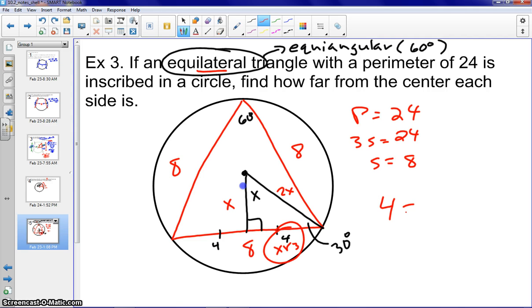So let's go ahead and take the 4, set that equal to X root 3, and solve for that X. So divide by the root 3. And we always must rationalize the denominator. So we get X equals 4 root 3 over 3, which is exactly what we're looking for over here. That is the distance away from the center each side is.